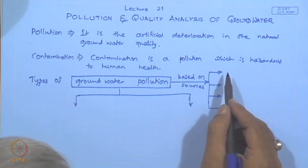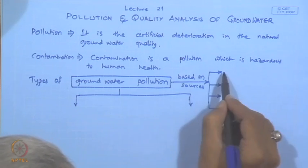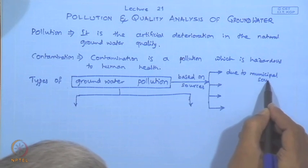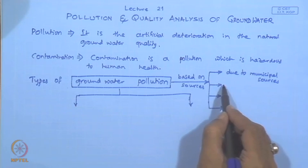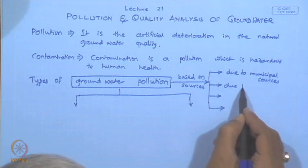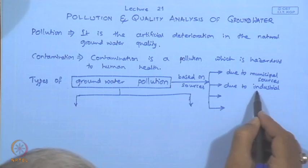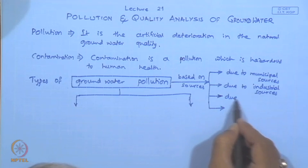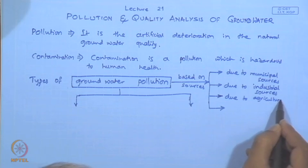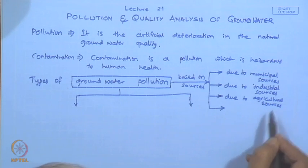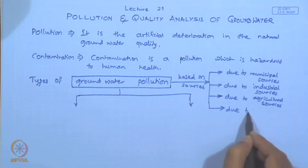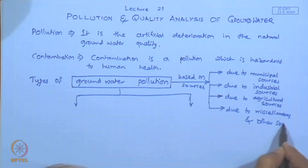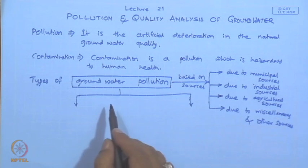Based on sources, we can classify groundwater pollution into: pollution due to municipal sources, pollution due to industrial sources, pollution due to agricultural sources, and pollution due to miscellaneous and other sources. Based on geometry, groundwater pollution can also be further classified.